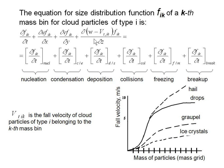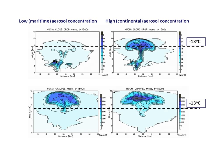A specific feature of this approach is that the fall velocity of particles depends on their mass and type. For example, ice crystals, graupel drops, and hail have different fall velocities, and moreover, this fall velocity depends on height. We also include the effect of turbulence on collisions between these different particles.